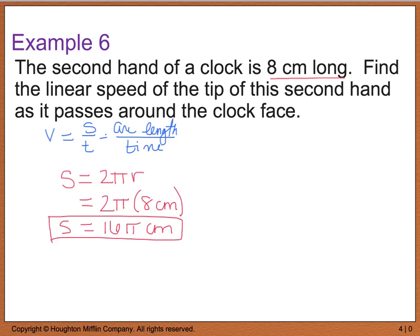I'm going to have to come back to that later. Then, I need to find my time, and we know that time was equal to one minute, because that's how long it takes for the tip of this hand to go all the way around the outside, and one minute is really equal to 60 seconds. So, now, if I want to find linear speed, or v,